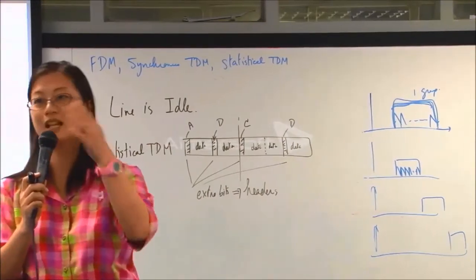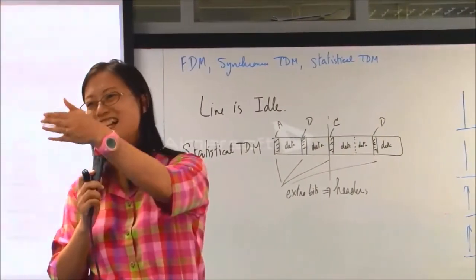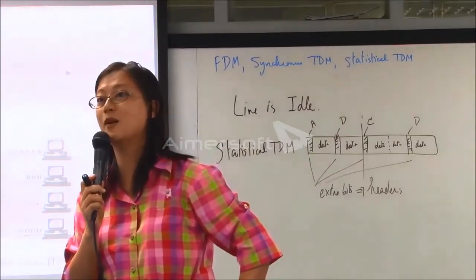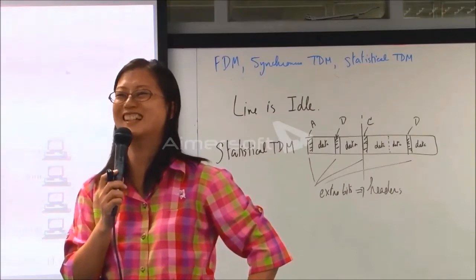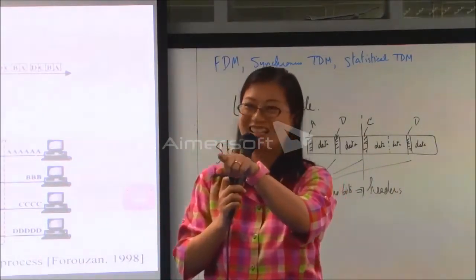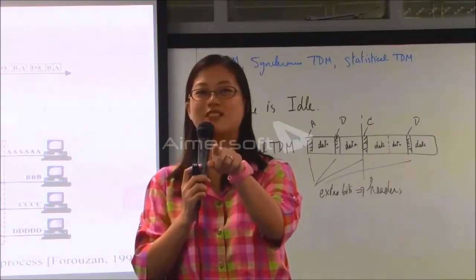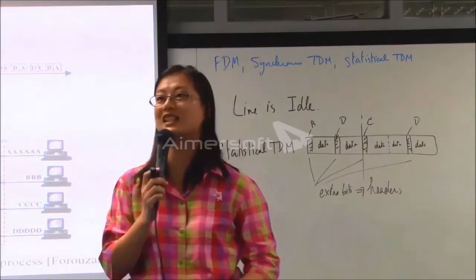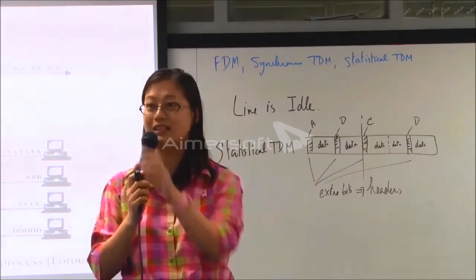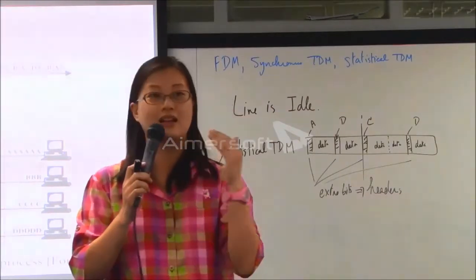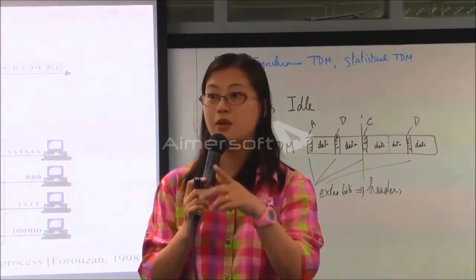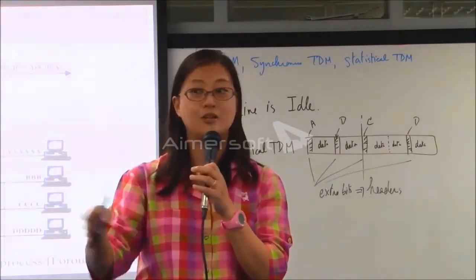Suppose everyone wants to speak — you have to say 'I am [name] speaking' and then speak. Then the next person says 'I am [name] speaking' and speaks. This recording of voices will have lower efficiency than synchronous TDM, because in synchronous TDM if everyone wants to speak you just send data — you don't have to identify your name.